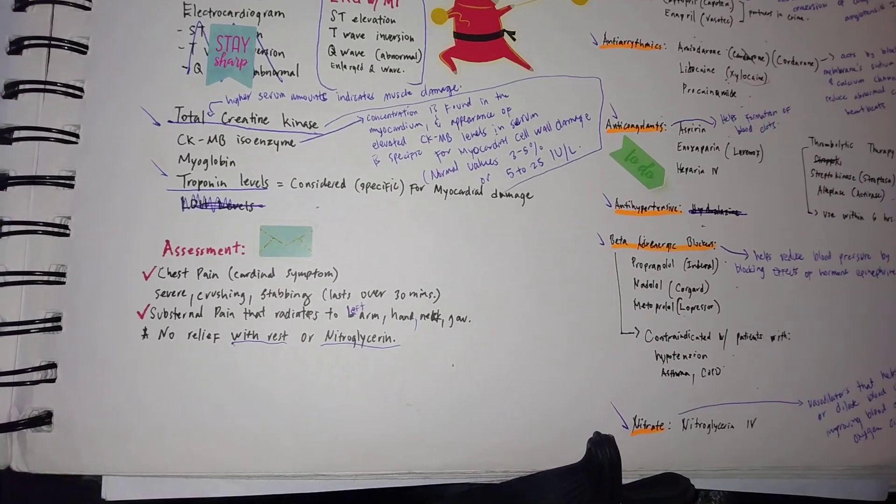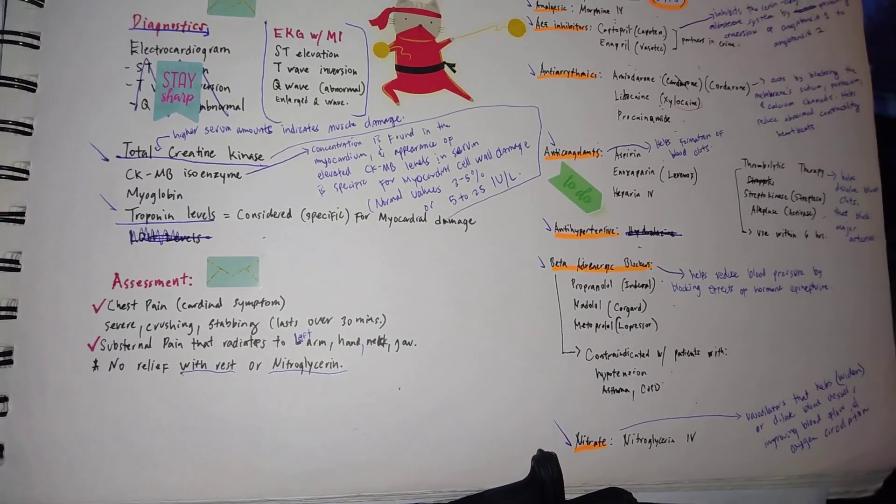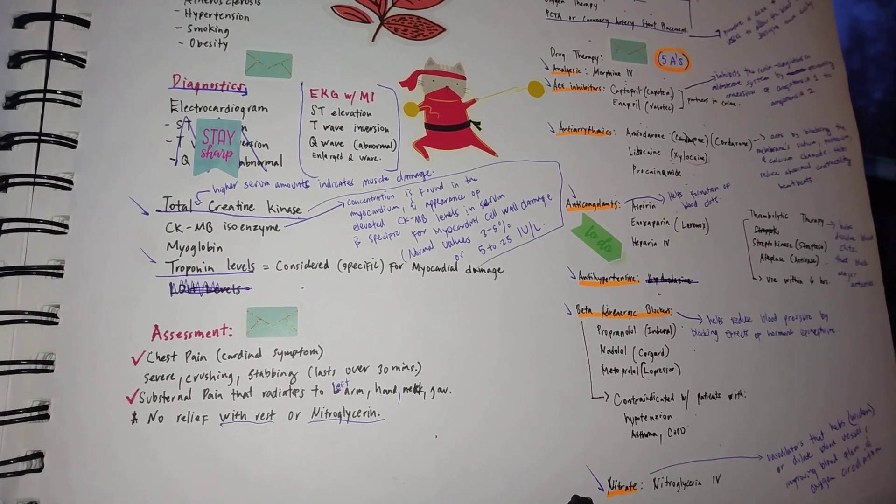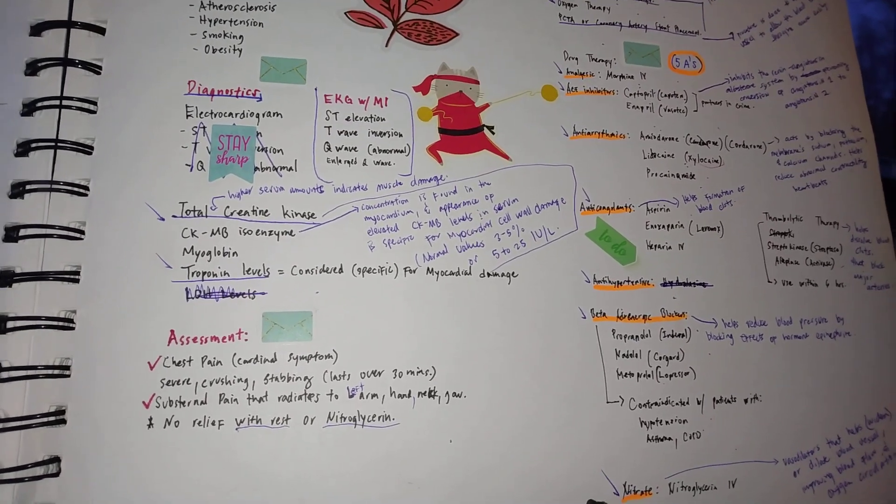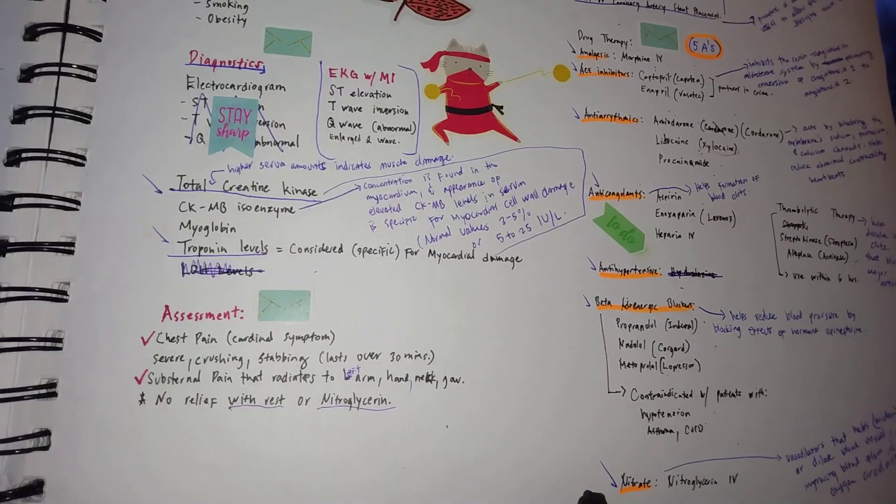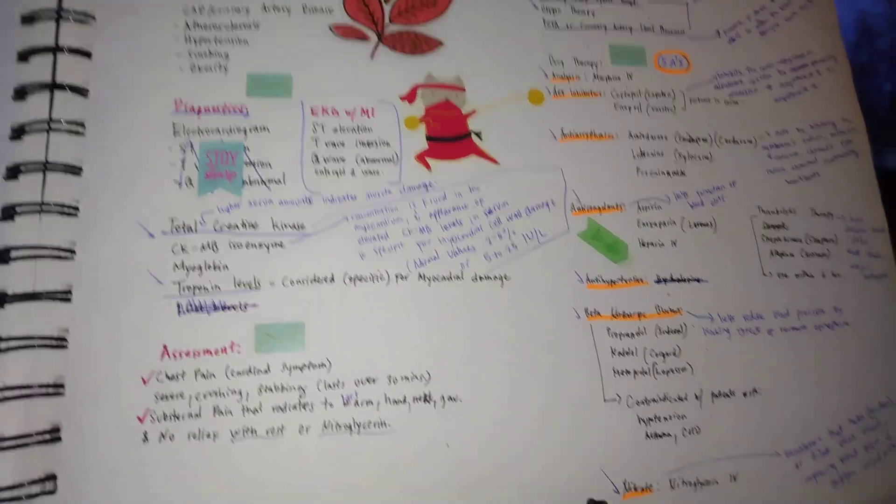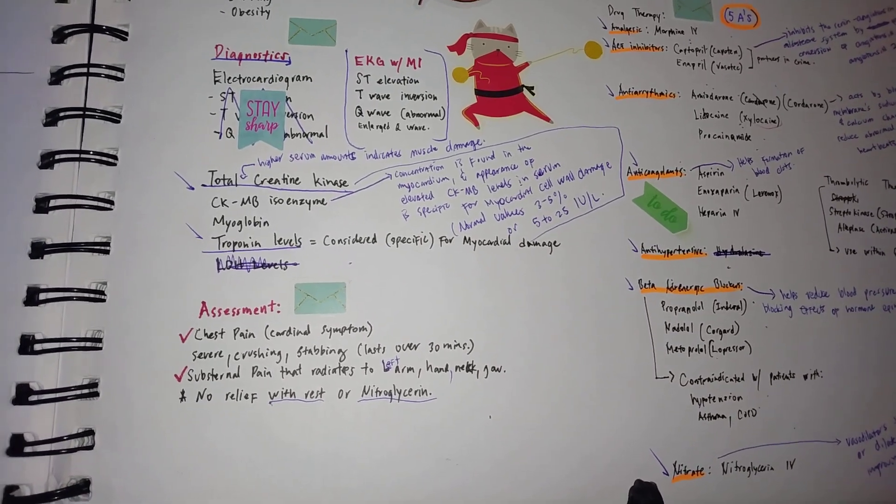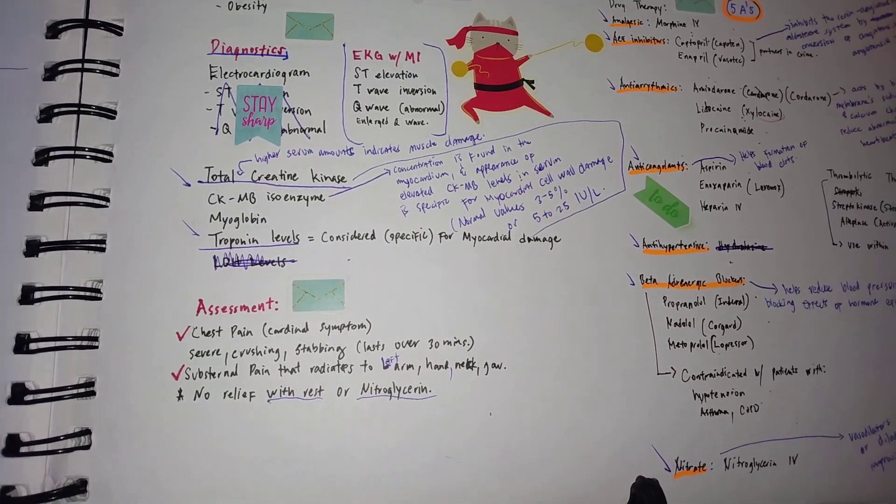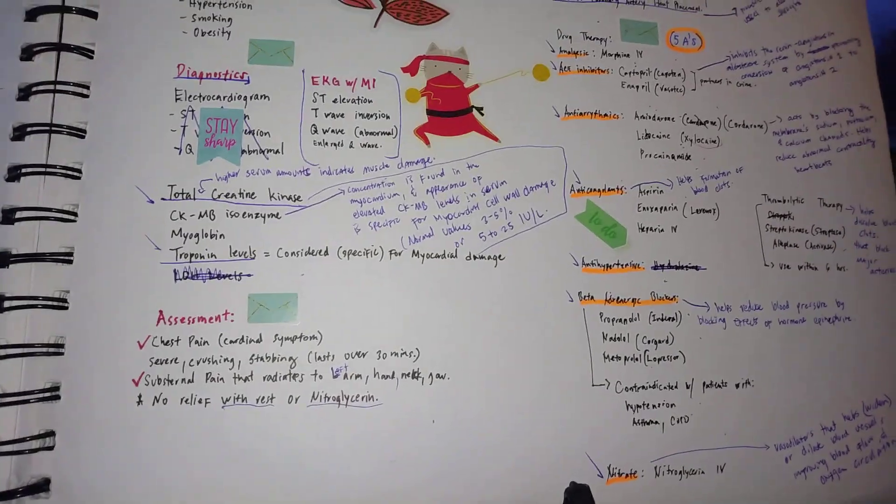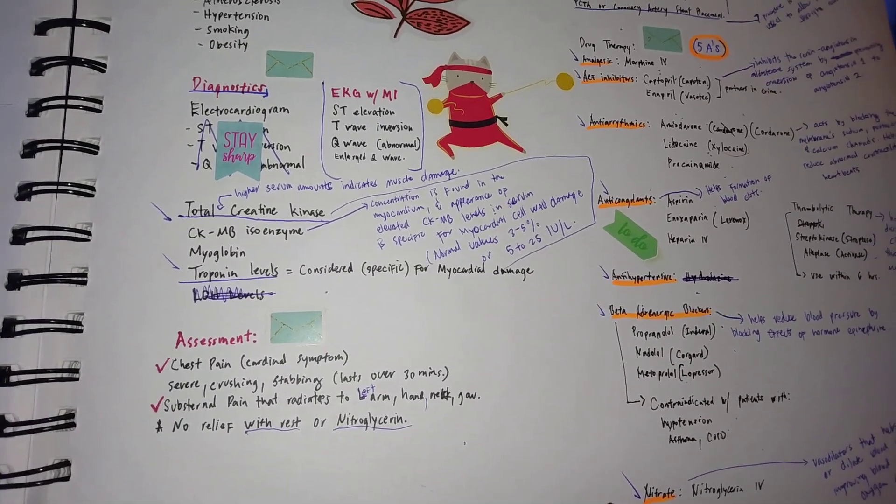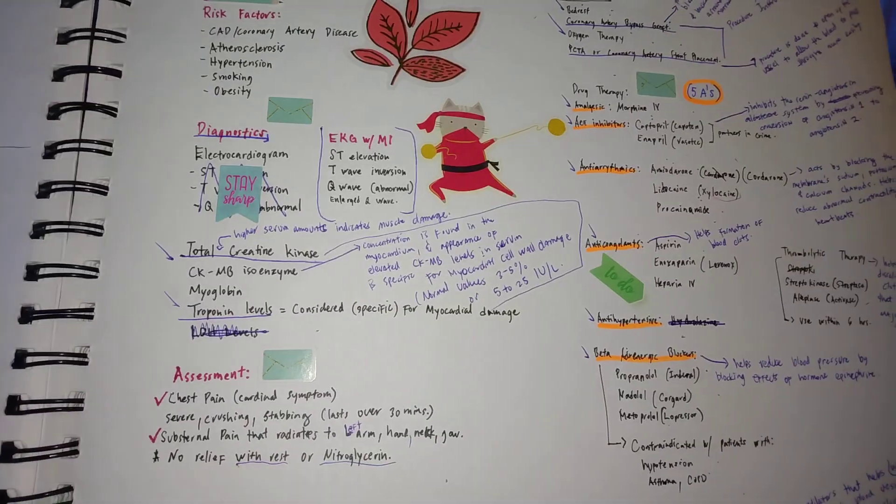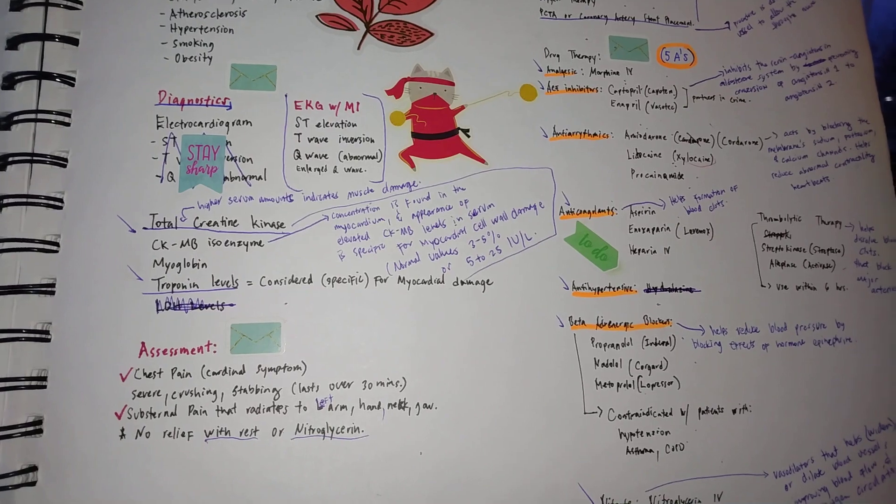With nitrates, it's basically a vasodilator that can help widen or dilate the blood vessel, which obviously can help improve the blood flow and the oxygen circulation. In regards to the beta-adrenergic blockers, the three main common drugs are your propranolol, your nadolol, and metoprolol, and basically helps reduce the blood pressure by blocking the effects of the hormone epinephrine.